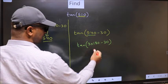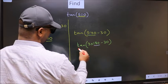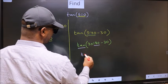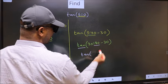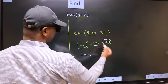Next, here we have 180. So tan is not going to change. It will remain tan. And inside, we get this angle 30.